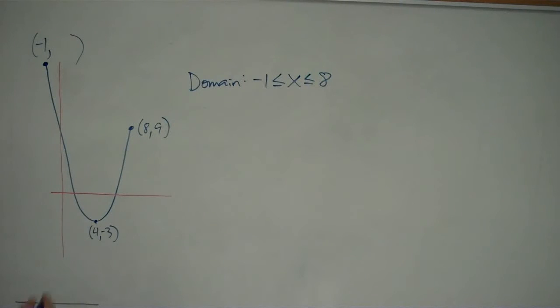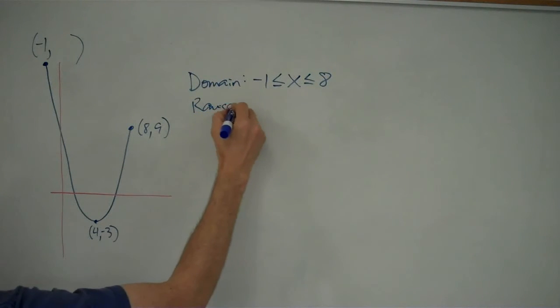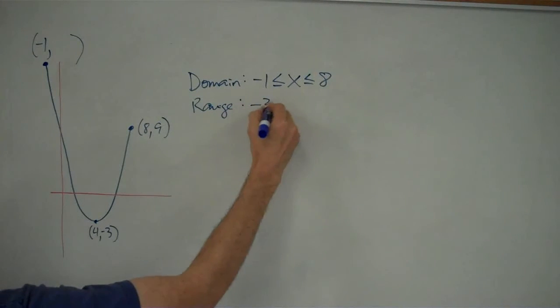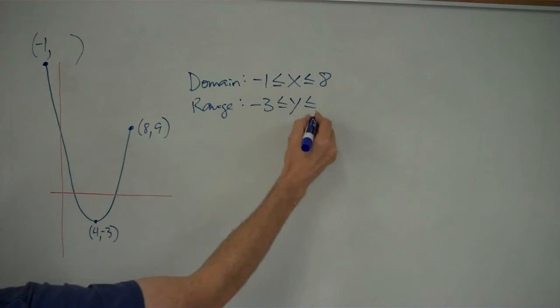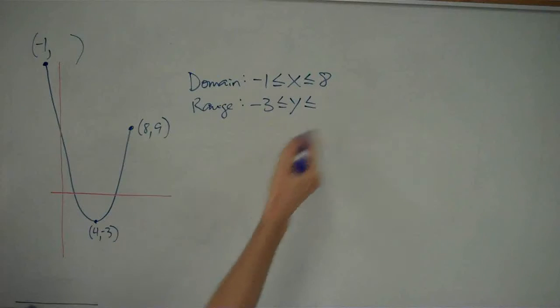Not sure exactly what my range is yet. I see that the range, the lowest point is negative 3. The highest point is not sure, so I'll just write what I know so far. The range goes from negative 3 to, we'll just have to leave that blank for now.